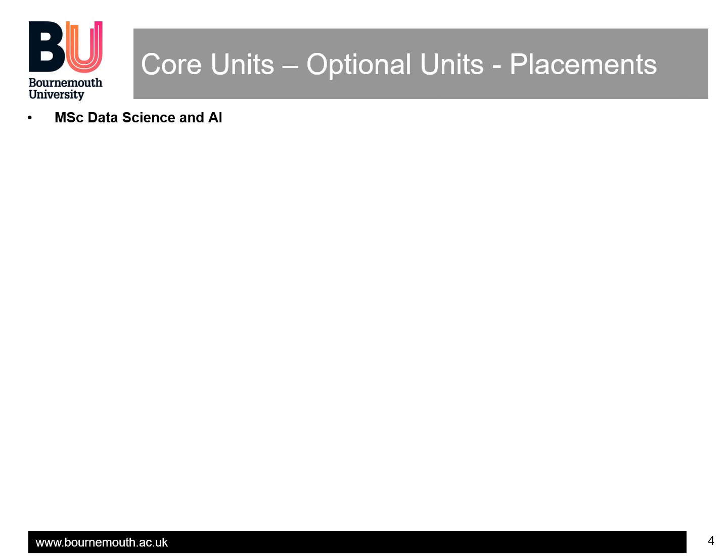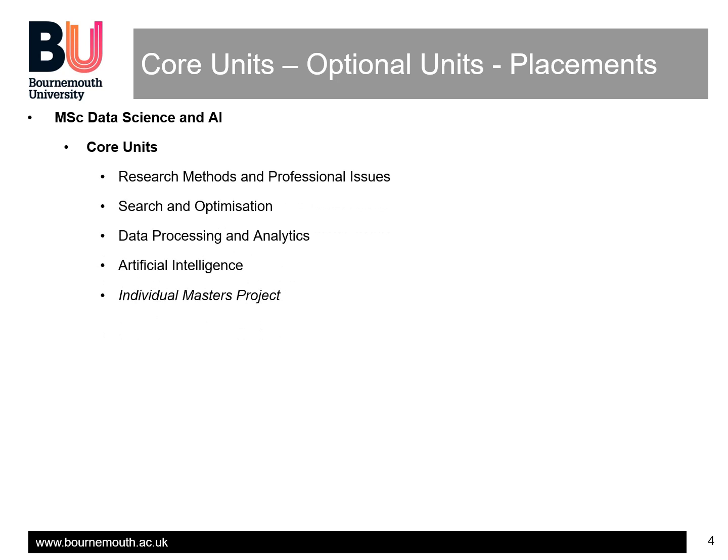The MSc Data Science and AI course consists of the following core units: Research Methods and Professional Issues, Search and Optimization, Data Processing and Analytics.